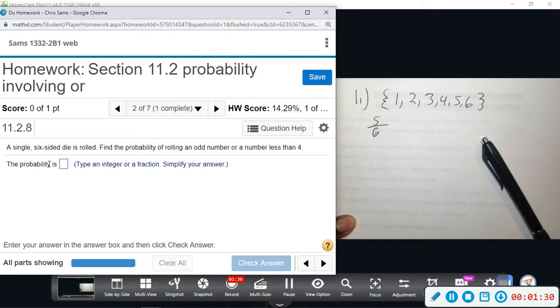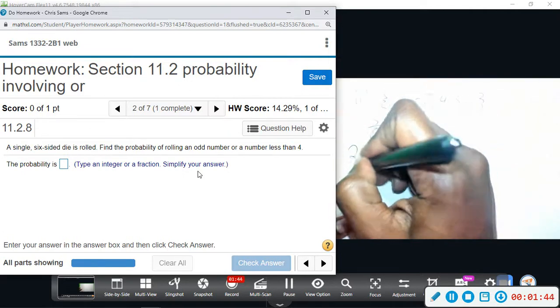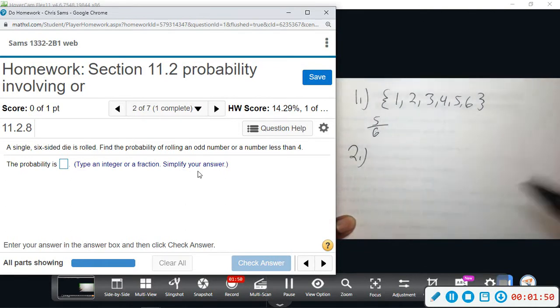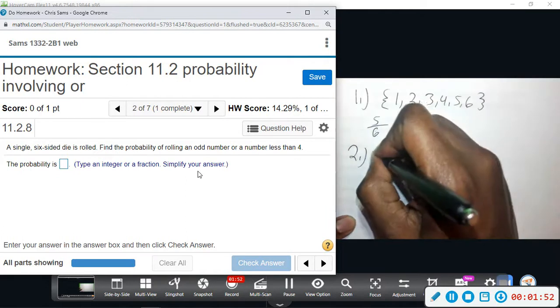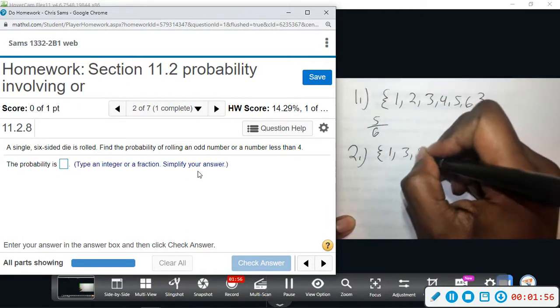Number 2: A six-sided die is rolled. Find the probability of rolling an odd number or a number less than 4. Same sample space. An odd number would be the numbers 1, 3, and 5. So I'm going to list those: 1, 3, and 5 - that's an odd number.